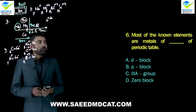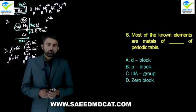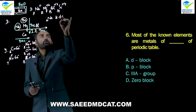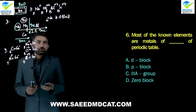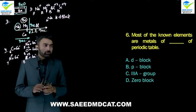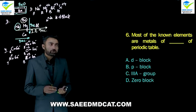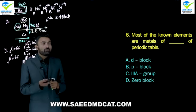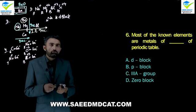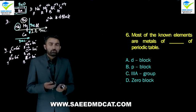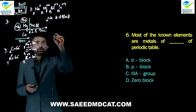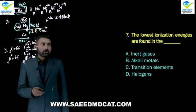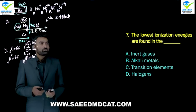Question 6: Most of the non-elements are metals of which block of the periodic table? This is an information-based question. The D block (D1 to D10) and F block — these are transition elements and have metallic nature. The major portion is D block metals. P block contains non-metals and zero block noble gases. Group 3A has aluminium, and the D block has titanium, vanadium, chromium, manganese — all of them are metallic. So the answer relates to the D block.